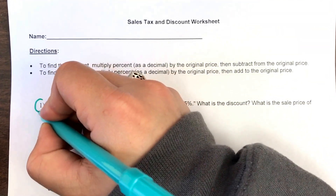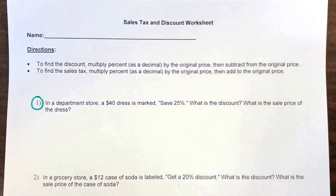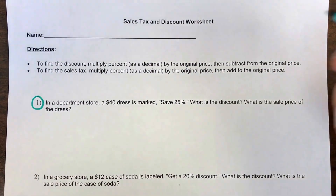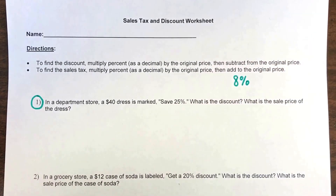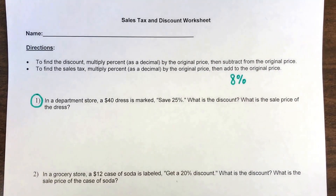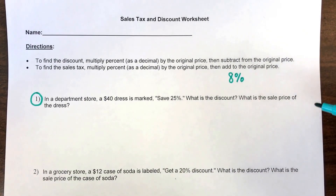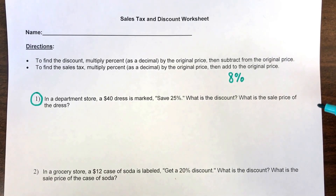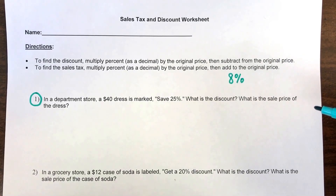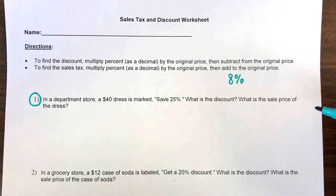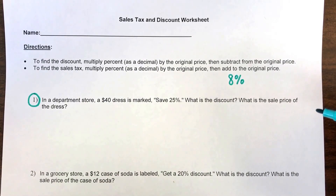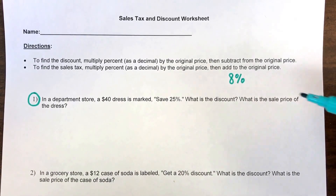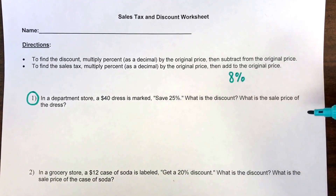For the second part we'll use 8% for sales tax when we get there. But let's look at the discount first. Number one: in the department store, a $40 dress is marked 'save 25%.' What is the discount?